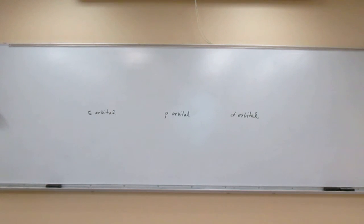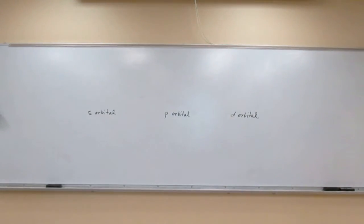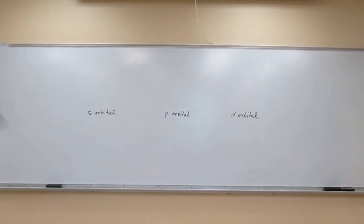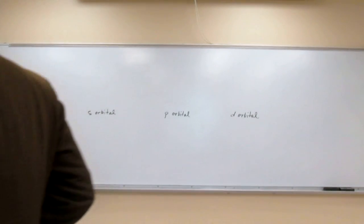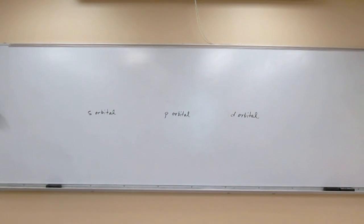So if anyone asks you, you want to say an s orbital is spherical, a p orbital is dumbbell shaped, and a d orbital is cloverleaf shaped. That's for most of the d orbitals. Out of the five d orbitals, four of them are cloverleaf shaped, and one looks like a dumbbell with a ring around it. We're going to draw all those things.